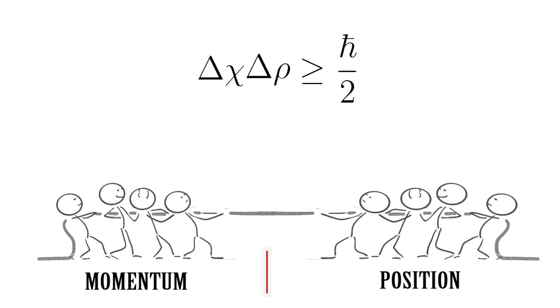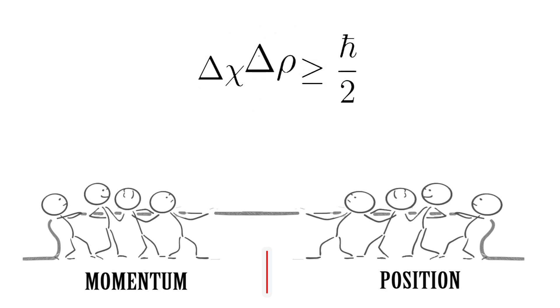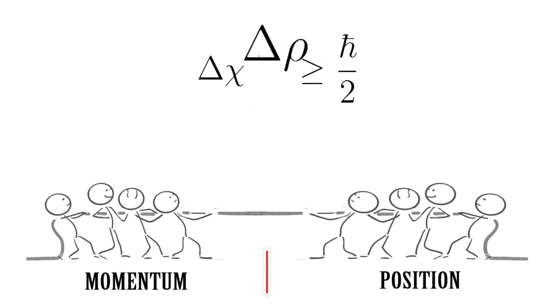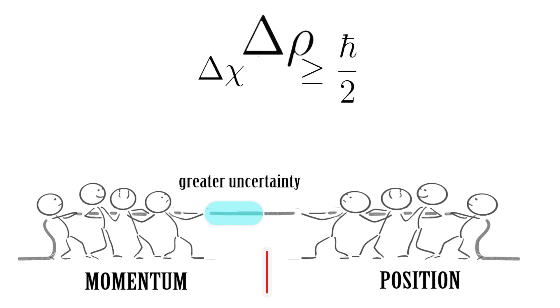Let's say, when the game starts, momentum pulls with a greater force. Therefore, it will have more uncertainty on its side than position and vice versa. This is how the uncertainty principle works.